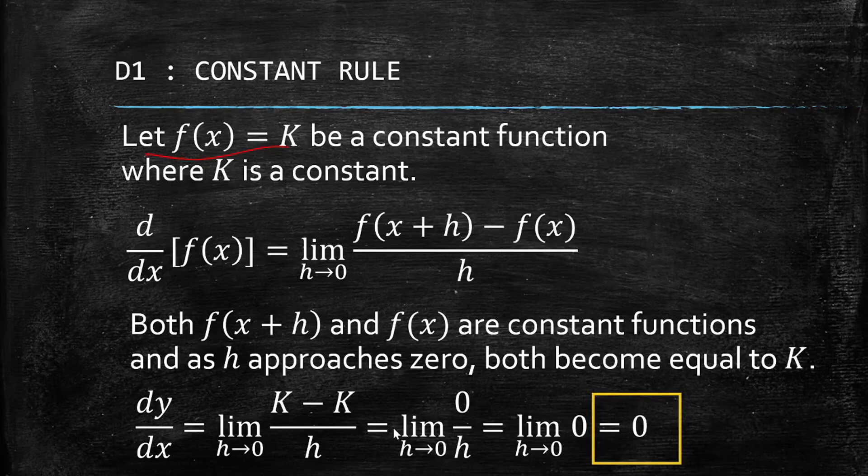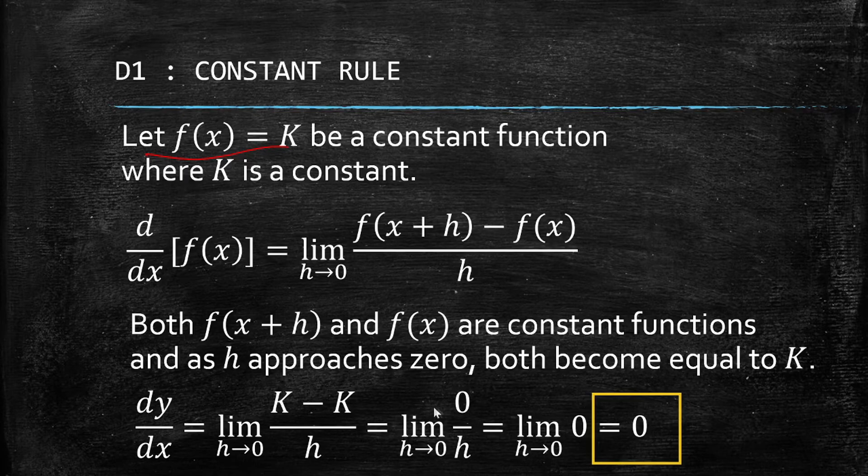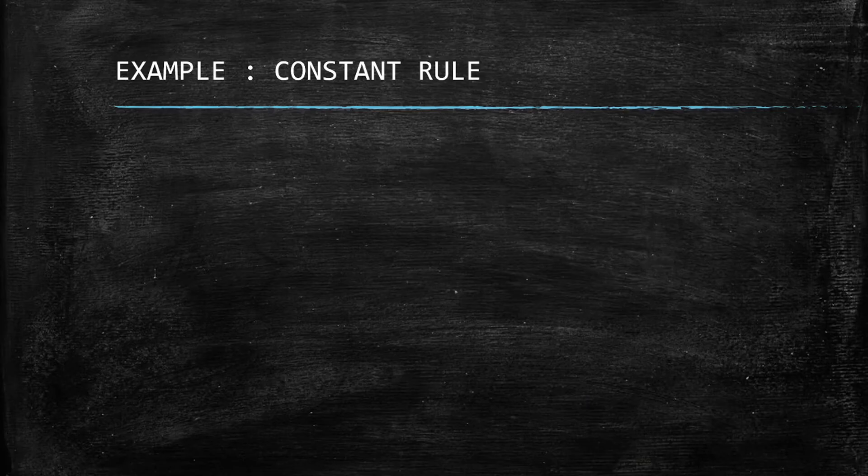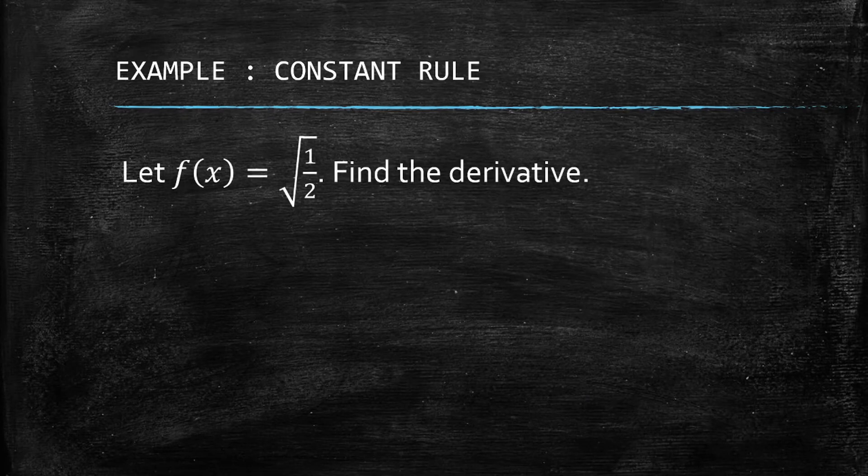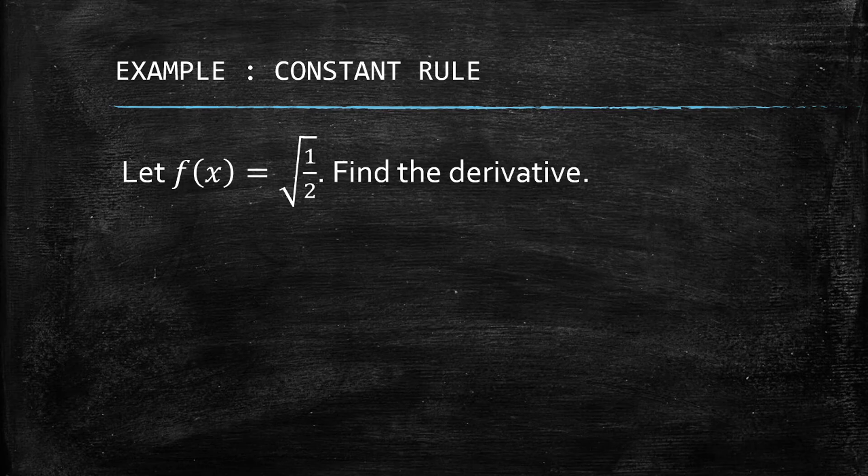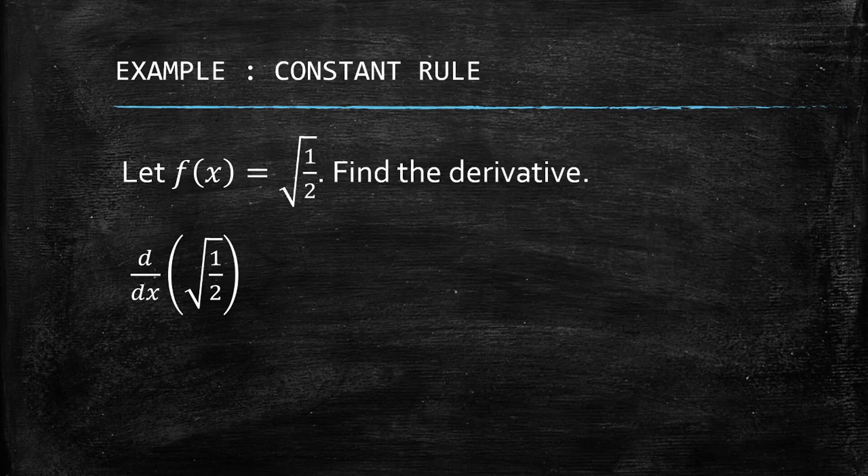So this is the proof of the constant rule. Now let's have an example. If we have f(x) equals a constant, square root of one-half is a constant—it does not contain any variable—and if you find the derivative, automatically we answer zero.